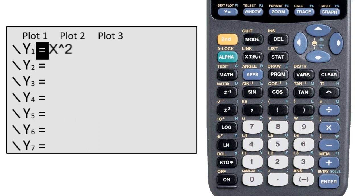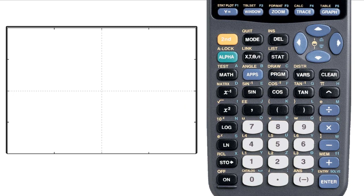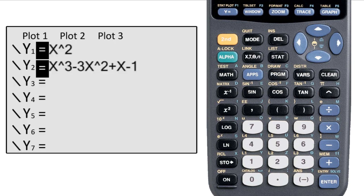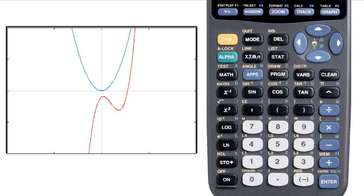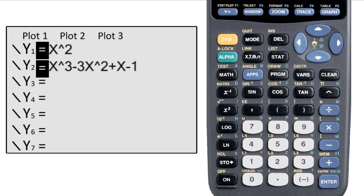A couple more things about the Y equals screen. Notice that to the left of the function that I entered, the equals sign is highlighted. This means that it's going to be displayed on the graph. I can unhighlight it and it won't show up on the graph. So if I have two functions on here and I only want to see one of them, but I don't want to clear the other, I can unhighlight the one that I don't want to see.